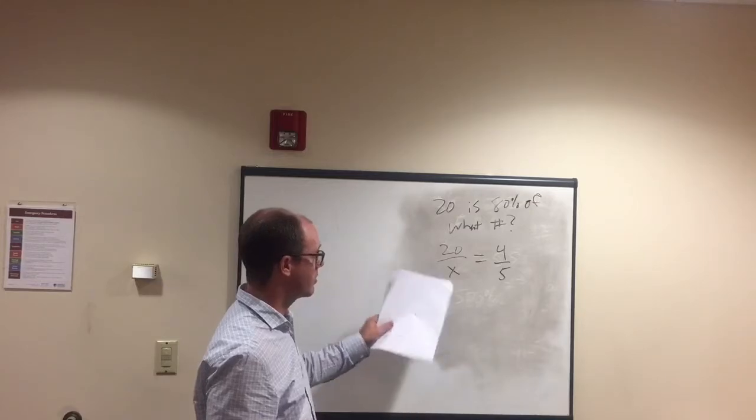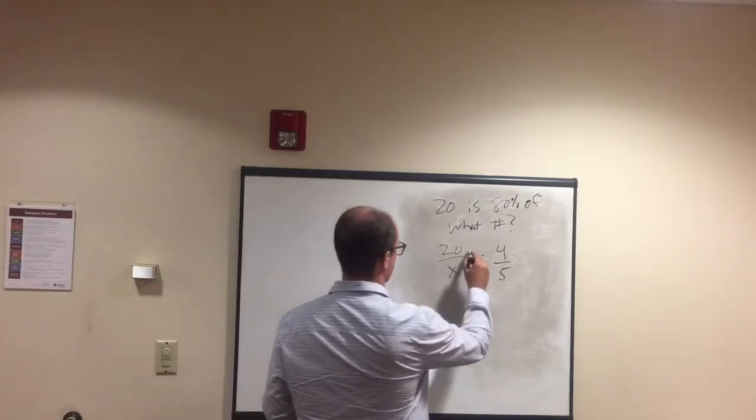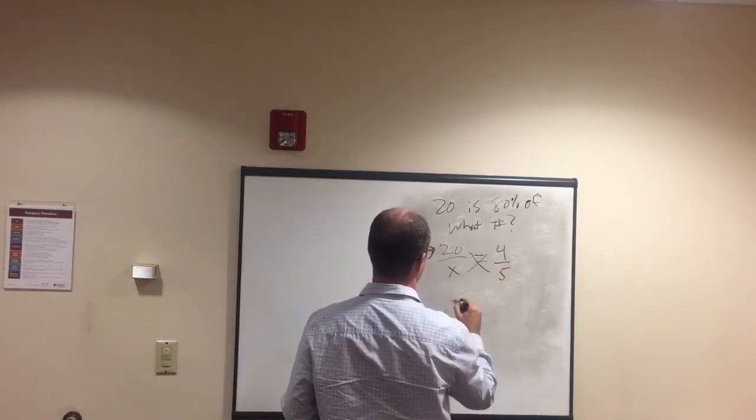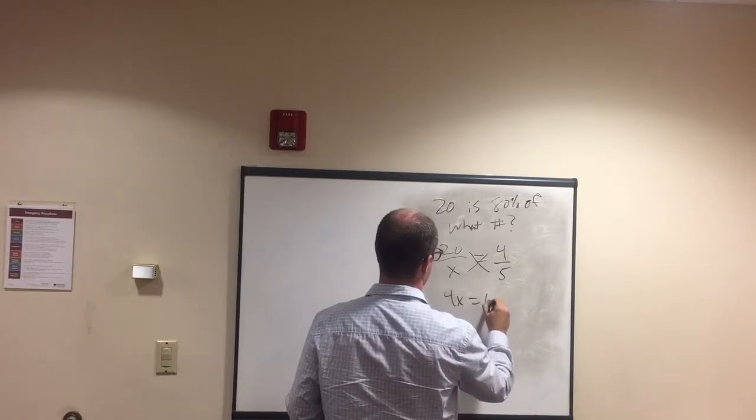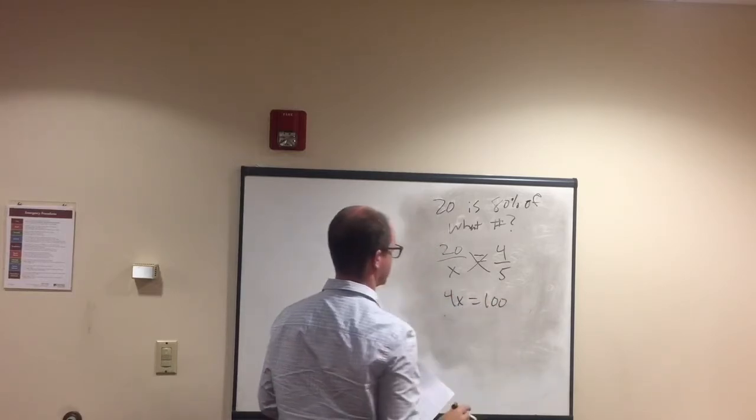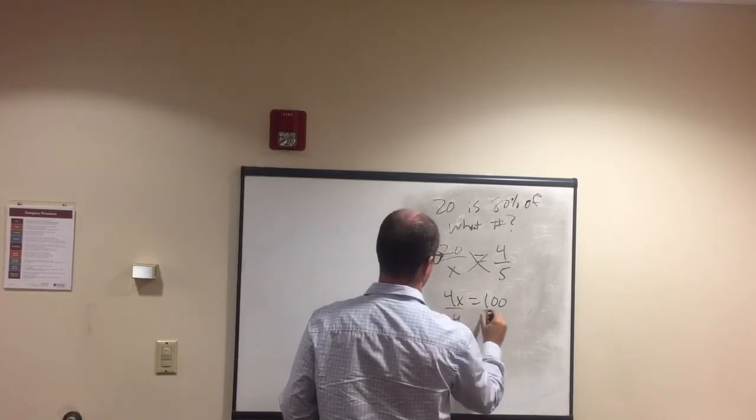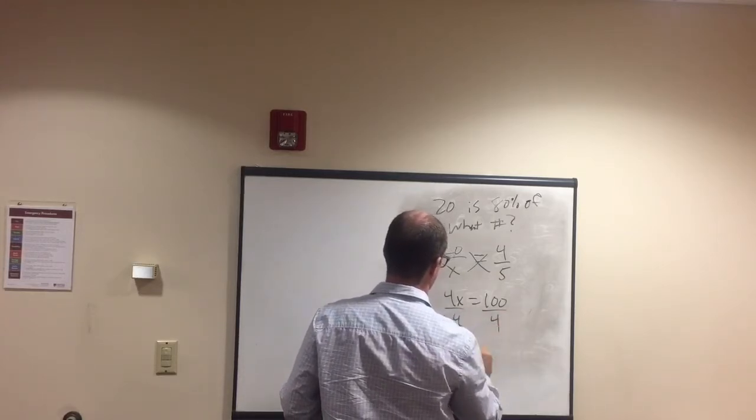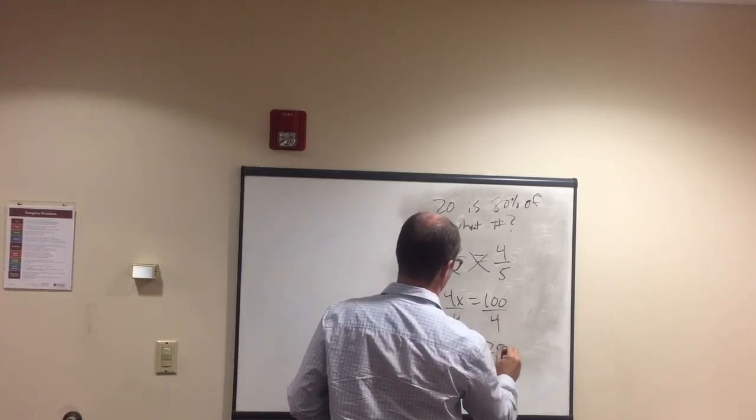And so once we have this set up, then we can go ahead and solve, cross multiply. 4x equals 100, divided by 4 on both sides,